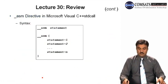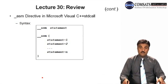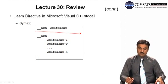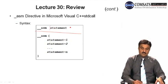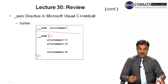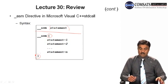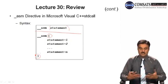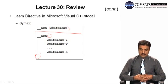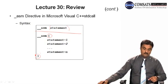We then discussed how to use inline directives or inline assembly code inside C++. Using the underscore ASM keyword, you can write a single assembly statement inline, or use a block with open and closing curly brackets to write multiple assembly statements inside C++ or Visual C.